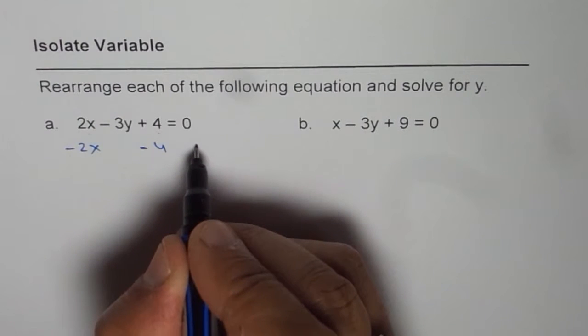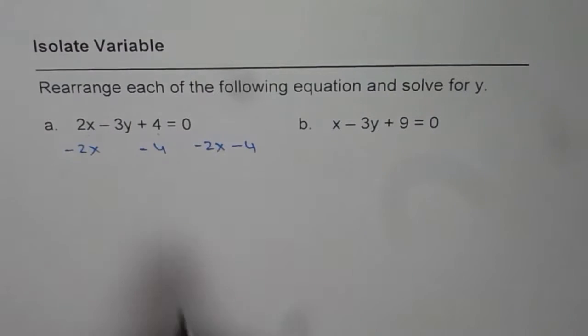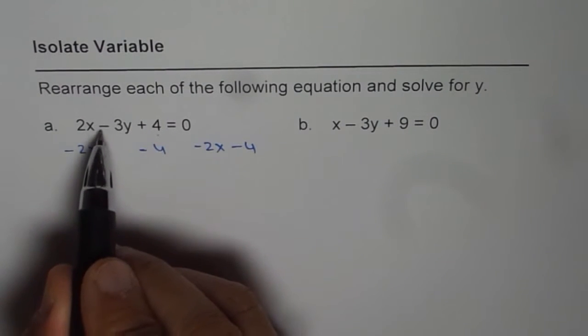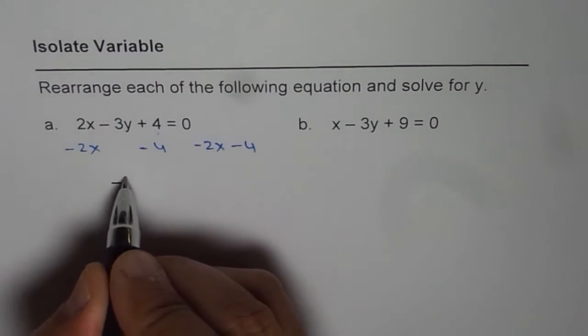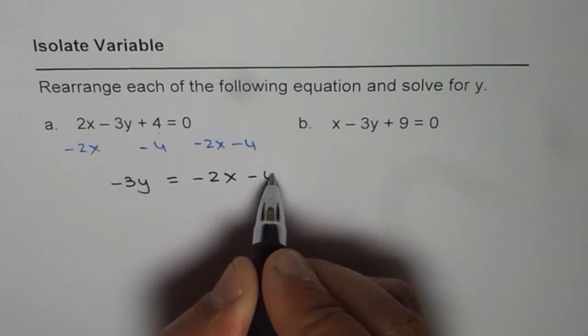That means from 0 we can do minus 2x minus 4. So that is a step which we are doing. If I do that, then what do we get? We get minus 3y on the left side equals to minus 2x minus 4.